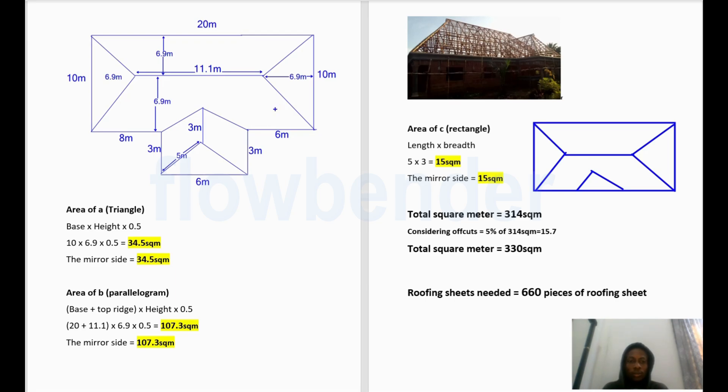So let's dive straight into our calculations. So now the first thing we want to do is check for the area of this triangle. The area of the triangle is the base, which is this, multiplied by the height, which is this slanting height, times 0.5. So that's the base times height times 0.5. So that's 10 times 6.9 multiplied by 0.5, you have 34.5 square meters. So I mentioned here that the mirror side, which is this side, the mirror side is 34.5. That means this is equal to this. So now we have the square meter of this and the square meter of this.